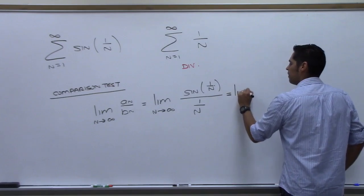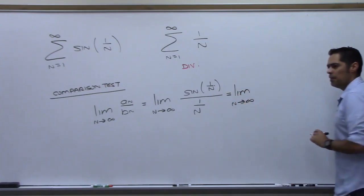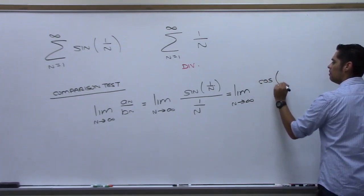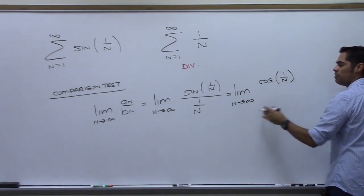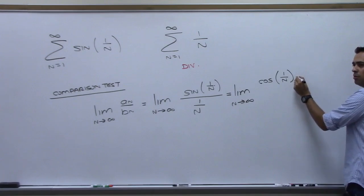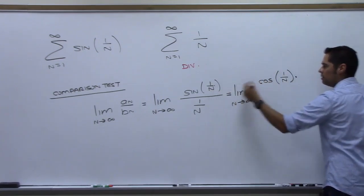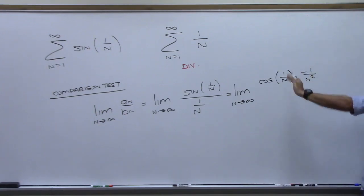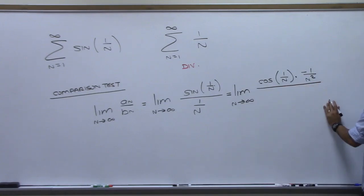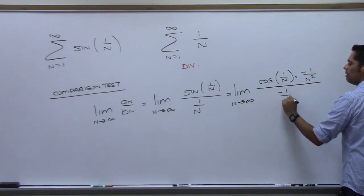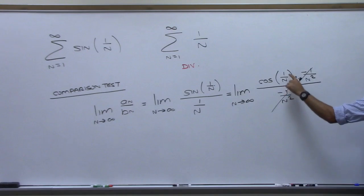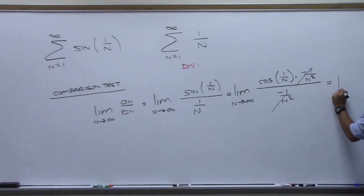The derivative of the top is cosine(1/n) times the chain rule derivative of 1/n, which is −1/n². That's the derivative of the top. Over the derivative of the bottom, which is also −1/n². Now let n go to infinity: 1/n → 0, cosine(0) = 1. That's a positive real number.